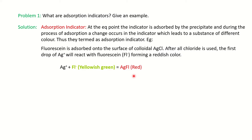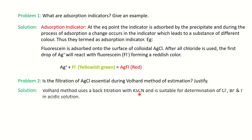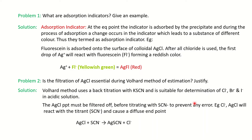The next question: is the filtration of silver chloride essential during the Volhard method of estimation? The Volhard method uses back titration with potassium thiocyanate for the determination of chloride, bromide, and iodide in acidic solution. We need to filter AgCl because it will react with thiocyanate and give a diffuse endpoint. So we must remove silver chloride before titrating with thiocyanate as a titrant, otherwise it will interfere and give a diffuse endpoint.